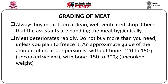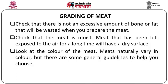Always buy meat from a clean, well-ventilated shop. Check that the assistants are handling the meat hygienically. Meat deteriorates rapidly, so do not buy more than what you need unless you are planning to freeze it. An approximate guide of the amount of meat needed per person without bones is about 120-150 grams of uncooked weight, and with bones a person will require about 150-300 grams of uncooked weight. Check that there is not an excessive amount of bone or fat that will be wasted when you prepare the meat.